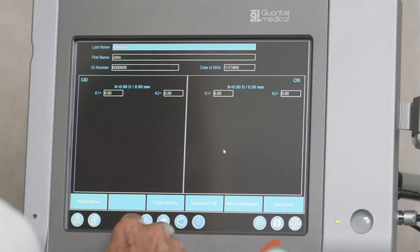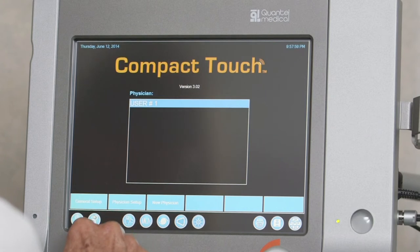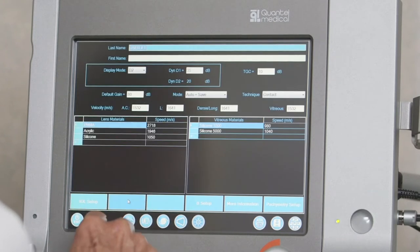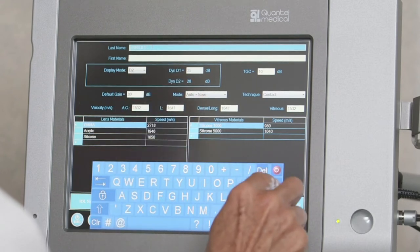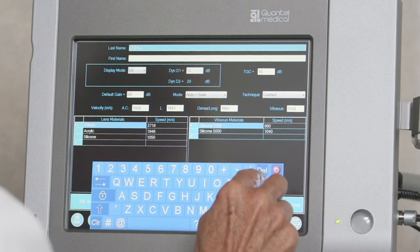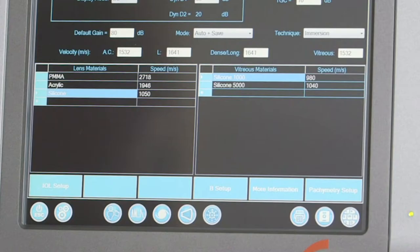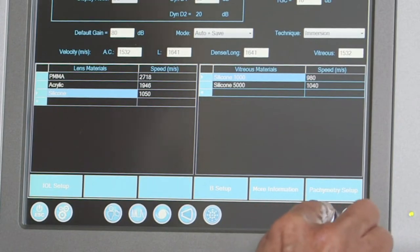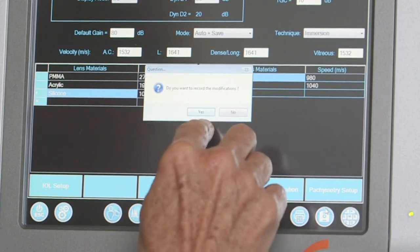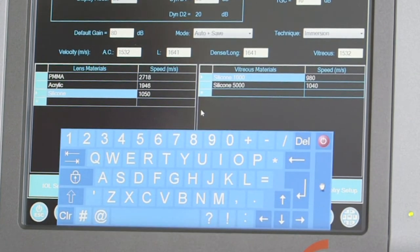A start-up screen is displayed when the system boots. A user profile can be chosen and modified by selecting Physician Setup from the bottom toolbar. Selecting New Physician creates a new user file. In addition to first and last names, default values for such parameters as Gain, Dynamic (DYN), and Time Gain Control (TGC) can be set. Once details have been entered, save the profile via the Save icon at the bottom of the screen.